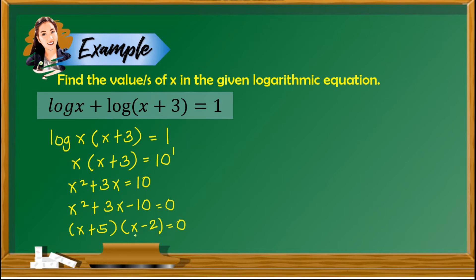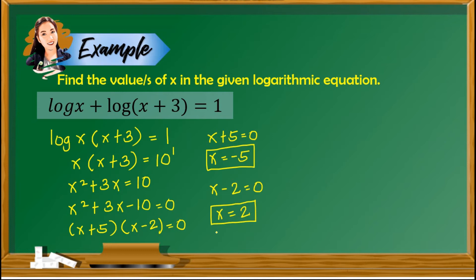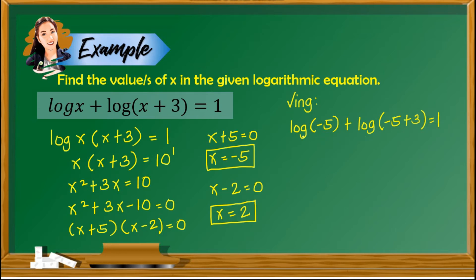Solving for x: x plus 5 equals 0 gives x equals negative 5, and x minus 2 equals 0 gives x equals positive 2. We have two possible values of x — are these real solutions? For negative 5: plugging in gives logarithm of negative 5 plus logarithm of negative 5 plus 3 equals 1. We have the logarithm of a negative number, and based on the property of logarithm, we don't take the logarithm of a negative number. Therefore, negative 5 is not a real solution.